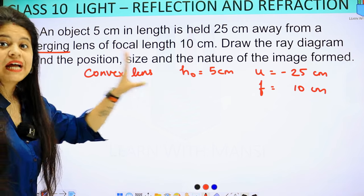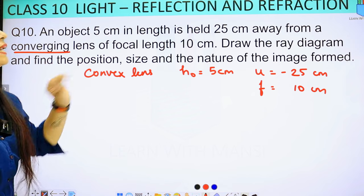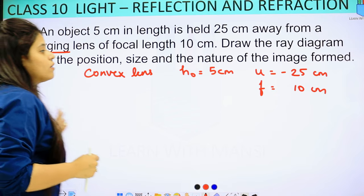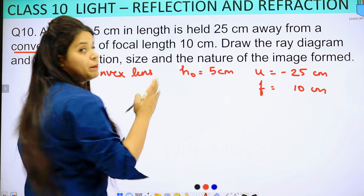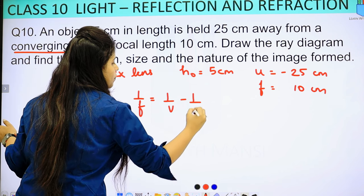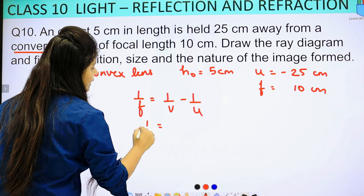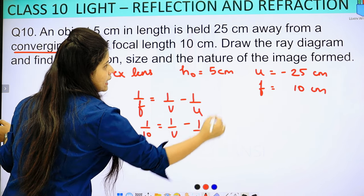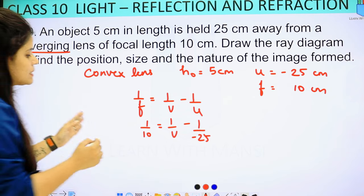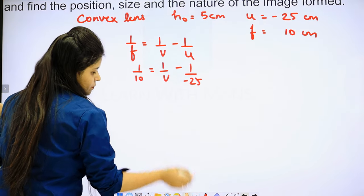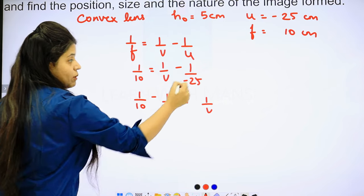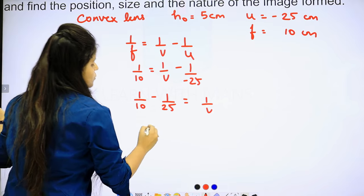We will make the ray diagram and solve these things numerically. Using the lens formula: 1 upon f equals 1 upon v minus 1 upon u. Here f is 10, v is what we need to find, and u is minus 25. So it becomes 1 upon 10 equals 1 upon v minus 1 upon minus 25, which gives 1 upon v plus 1 upon 25. We then rearrange: 1 upon v equals 1 upon 10 minus 1 upon 25.